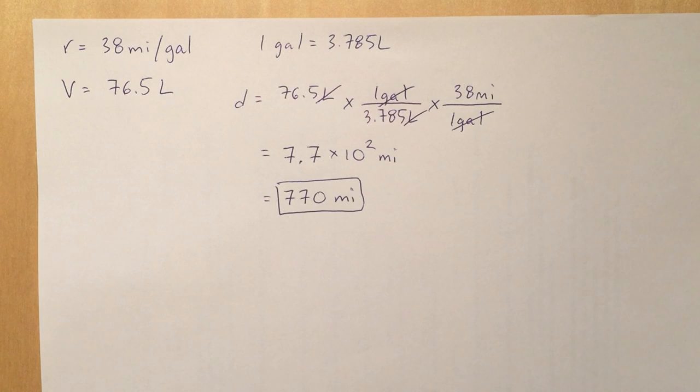And that number 770 only has two significant digits because there's no decimal point after that zero. So that zero is not significant. So remember your units and your sig figs and you should be set for this one.